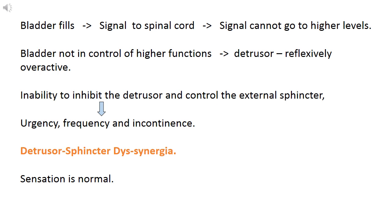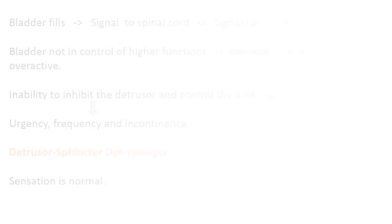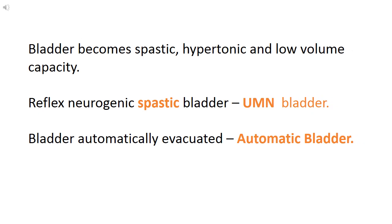Here, bladder sensation is normal. Bladder becomes spastic, hypotonic and low volume capacity. As we know, spasticity is a feature of UMN type of lesion, so it is called as UMN bladder. Here, bladder automatically gets evacuated, so it is also called as automatic bladder.